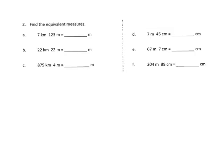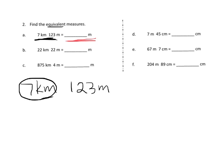In this problem, we're supposed to find the equivalent measures. Starting with 7 kilometers and 123 meters, they're asking us to figure out how many meters that is. We know each kilometer is equal to 1,000 meters, so 7 kilometers is equal to 7,000 meters, plus the extra 123 meters, giving us a total of 7,123 meters.